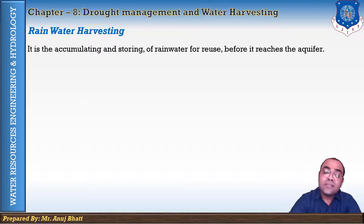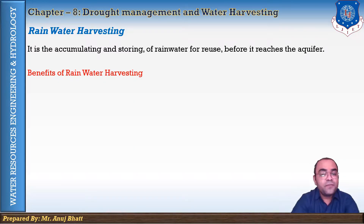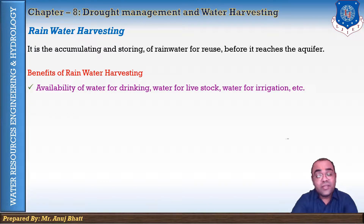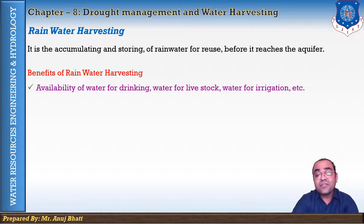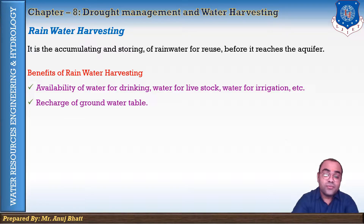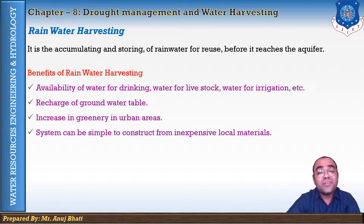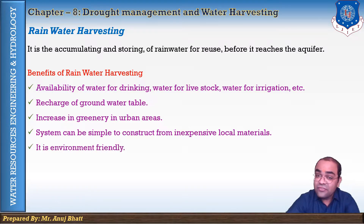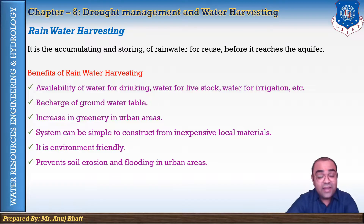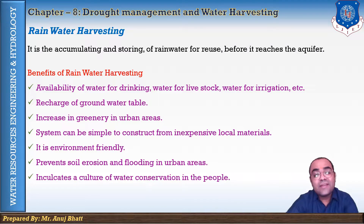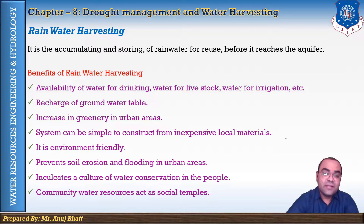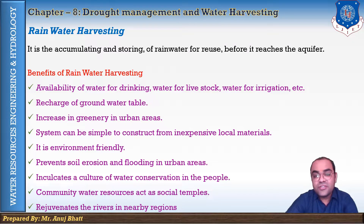For that, we can do rainwater harvesting. The benefits of rainwater harvesting include: availability of water for drinking, water for livestock and irrigation, recharging of the groundwater table, and increased greenery in urban areas. The system is simple to construct and inexpensive. It is environmentally friendly, prevents soil erosion and flooding in urban areas, inculcates a culture of water conservation in the community, and rejuvenates rivers in nearby regions.